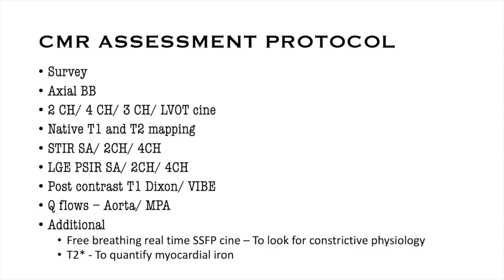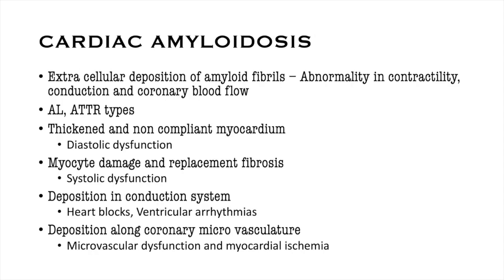A post-contrast T1 is often obtained for anatomical imaging of the chest. Additional sequences used in specific circumstances include the free-breathing real-time SSFP cine sequence to look for constrictive physiology, and T2-star images to quantify myocardial iron. Let's review a few of the common infiltrative cardiomyopathies encountered in day-to-day practice.